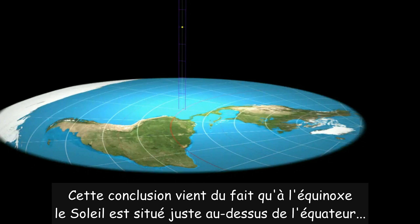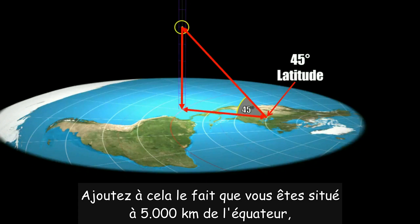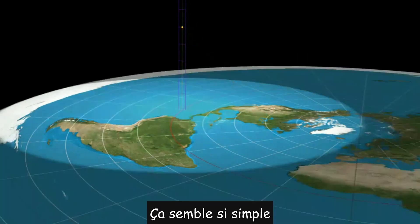This determination is because when viewing the sun on the equinox, which is directly over the equator from the 45-degree latitude position, the sun is 45 degrees above the horizon. When you couple that with the distance of the observation point to the equator, you get a rough distance of 5000 kilometers. So geometry would say that the sun's altitude is 5000 kilometers. Seems pretty simple.